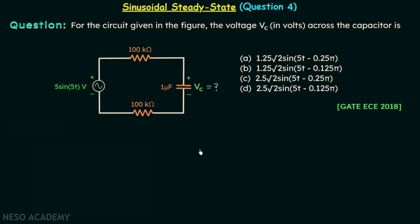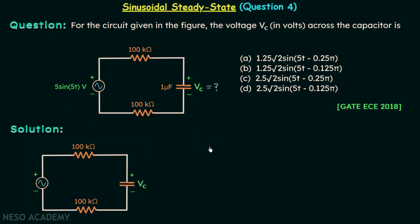Now we will move on to the solution. Step number one is to convert this circuit to the frequency domain. We will start with the voltage source — corresponding to the maximum value, we will have 5∠0° volts as the phasor voltage. The two resistors will remain as they are. In place of one micro farad, we will have minus j over (5 × 10⁻⁶), which simplifies to minus j200 kilo ohms. In place of VC we will have VC phasor.